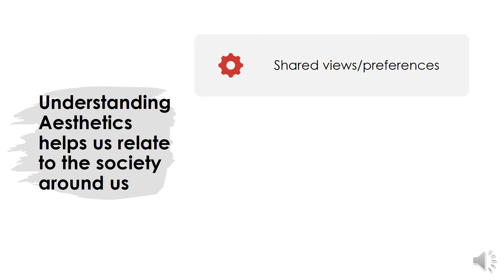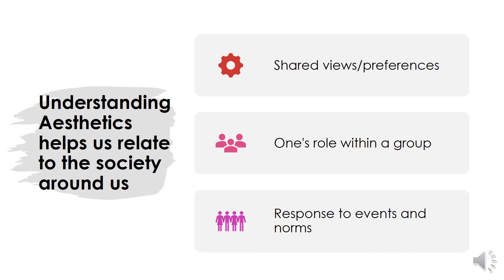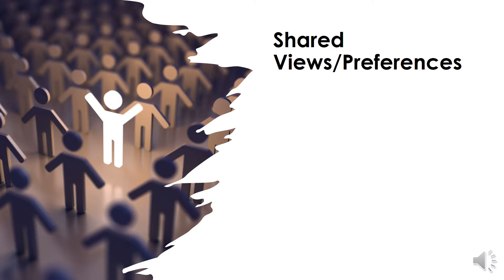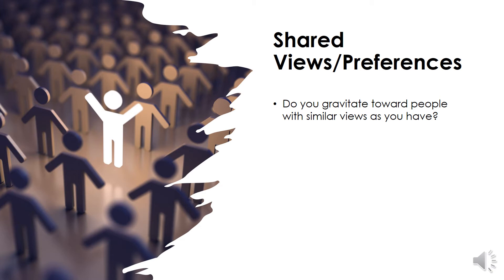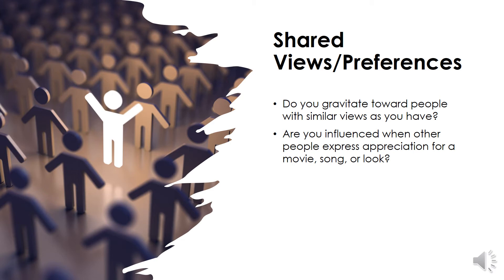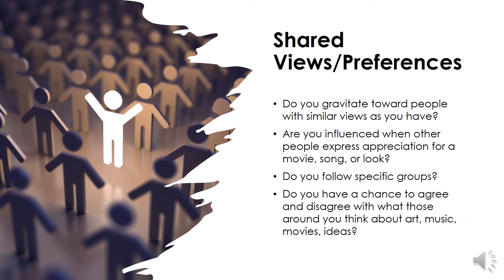Understanding aesthetics also helps us relate to the society around us. In society, we share our views and preferences, and we tend to go into groups that share the same ideas. We define our role within a specific group — are we a follower or a leader? This determines how we respond to events and norms, which can be reflected in the way we portray ourselves, the types of books we read, or what we create. Do you gravitate toward people with similar views? Are you influenced when others express appreciation for a movie, song, or look? Do you have a chance to agree or disagree with what those around you think about art, music, movies, and ideas?